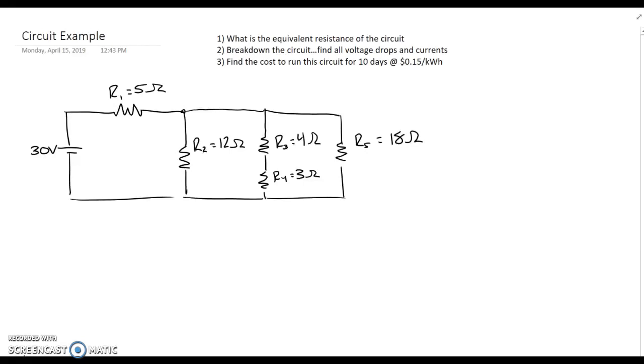Hey guys, I thought I'd break down a circuit for you as we prepare for our test tomorrow. I've got a circuit out here. I've labeled all the resistors R1 through R5 with a source voltage of 30 volts. We're looking for the equivalent resistance, then we're going to break down the circuit to find all voltage drops and currents. And finally, we'll determine the cost to run this circuit for 10 days at 15 cents per kilowatt hour.